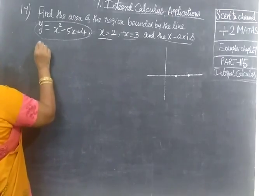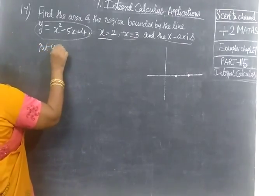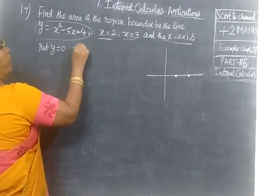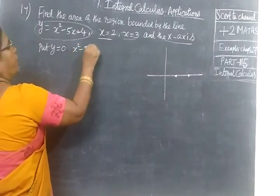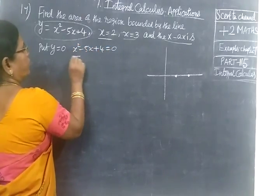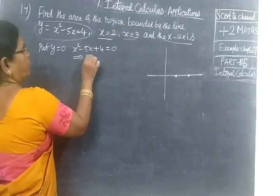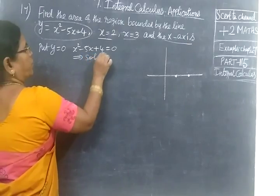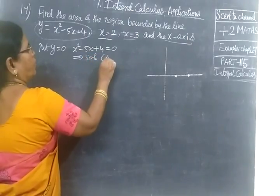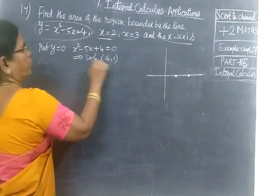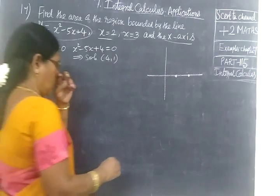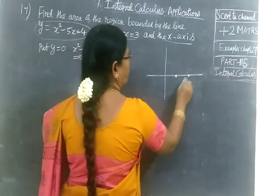So put y equal to 0. So x squared minus 5x plus 4 equal to 0. The solution implies x equal to 1 and x equal to 4. So the points are 1 and 4.